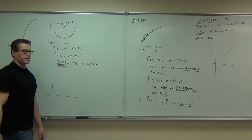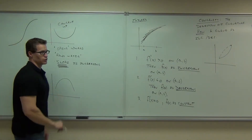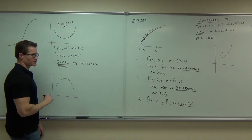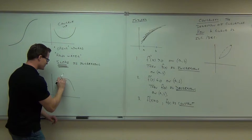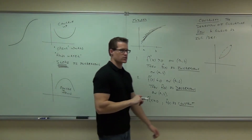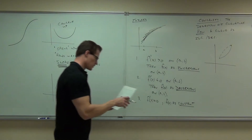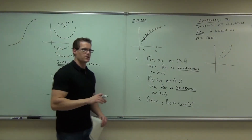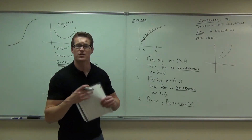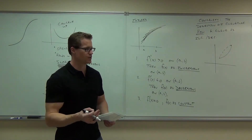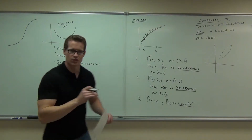What does concave down look like? It's your umbrella — water slides right off it. It opens downward; it would not hold water. But really what it means is that your slope is decreasing. Whether your function is increasing or not doesn't matter for concavity. Concavity says how's the slope changing? Slope changing for concave down means it's decreasing.